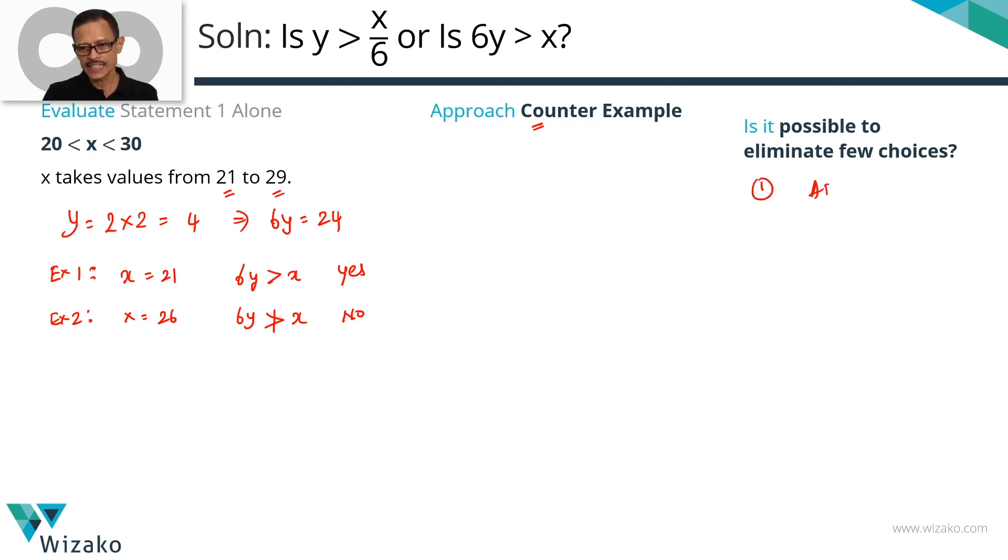Statement 1 is not sufficient, you can eliminate answer options A and D. We're down to B, C or E. Let's evaluate statement 2 alone. If that is sufficient, we'll go with B. Else we'll combine and check whether it is C or E.